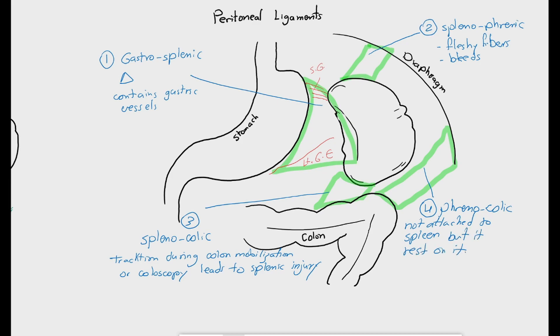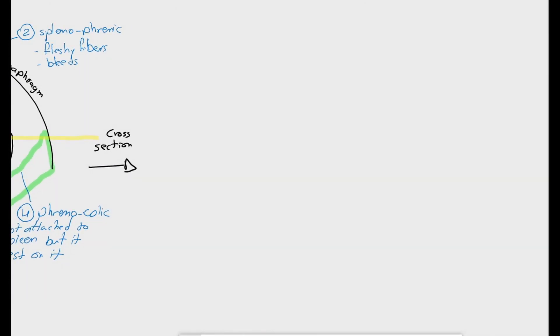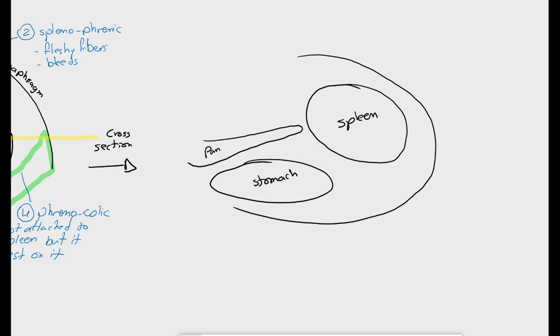The fifth important peritoneal ligament is not visible in this view. It is the splenorenal ligament which is now covered by the stomach. We will imagine a cross section just like CT images. This is the spleen at the far left side and here is the stomach and behind it in the retroperitoneal space lies the pancreas and the kidney, the left kidney of course.